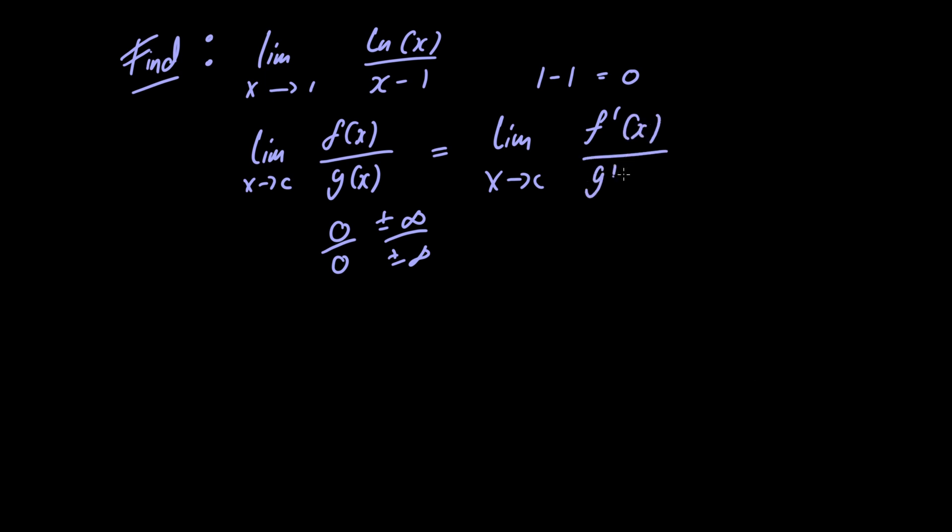Now the natural logarithm of x and x minus 1 are both differentiable at 1 and the natural logarithm of 1 is equal to 0. So we have an indeterminate form of 0 over 0 and both functions are differentiable.